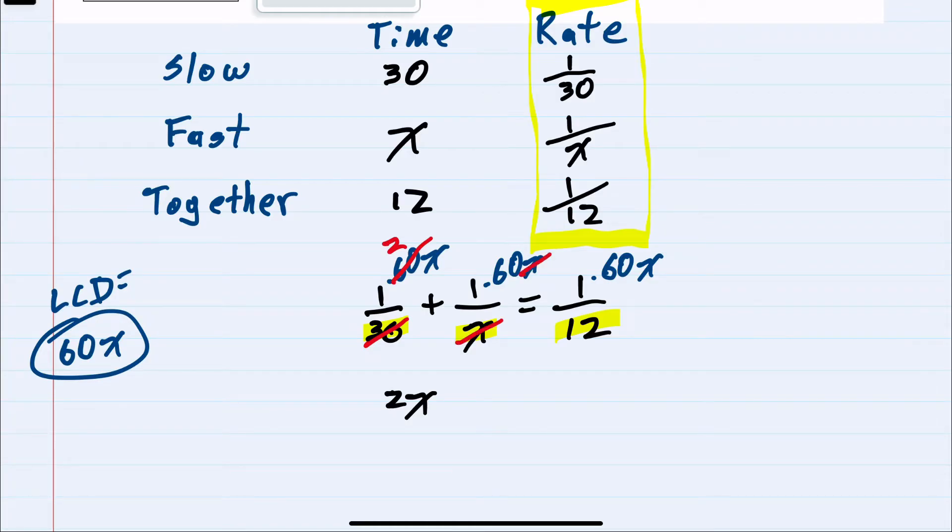In the center here, the x's cancel. 1 times 60 is 60. And on the right-hand side, 12 goes into 60 five times. 1 times 5x is 5x.